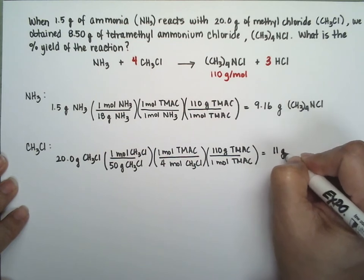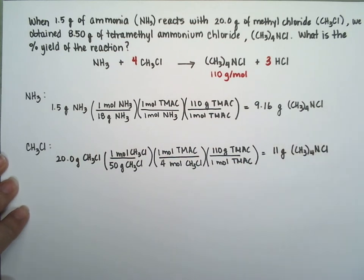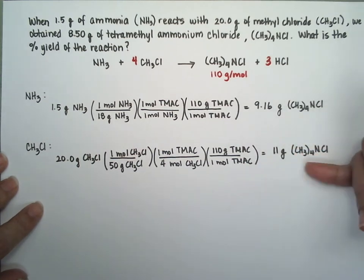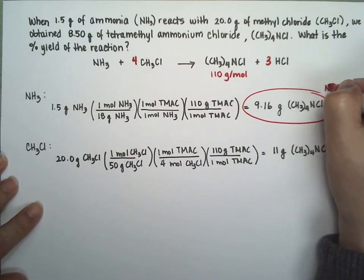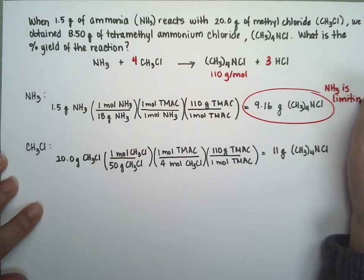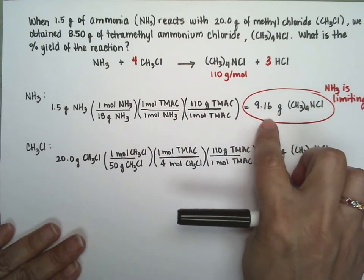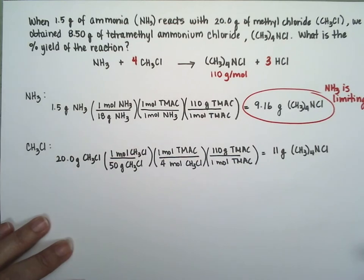From methyl chloride, we get 11 grams of tetramethyl ammonium chloride. We have to decide which is the limiting reagent — it's the one that gives us the least amount of product. Ammonia gives us less, so ammonia is the limiting reagent. If the reaction went perfectly, we would get 9.16 grams of tetramethyl ammonium chloride.